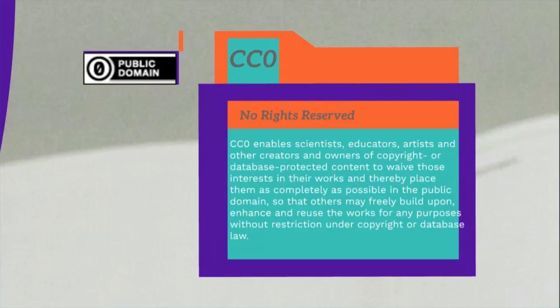Then we have the CC0 license, but before discussing CC0 you must be aware of the term public domain. Public domain is the state of being available to the public and not subject to copyright. There are 3 main categories of public domain: works that automatically enter the public domain upon creation and are not copyrightable.